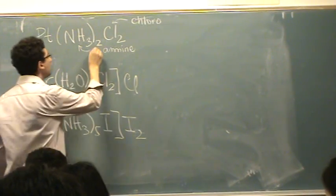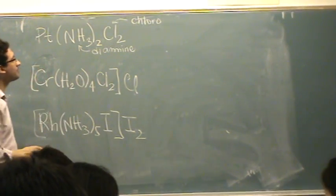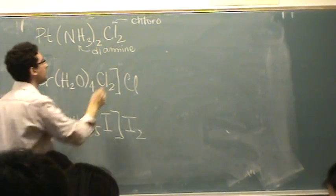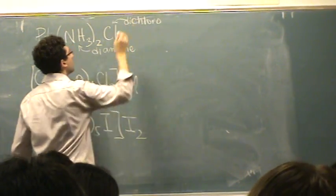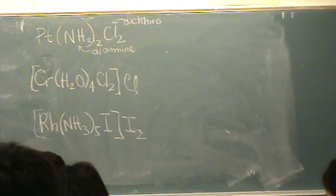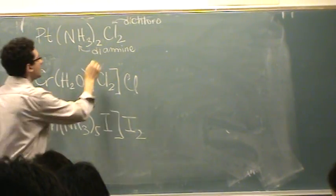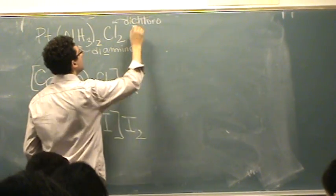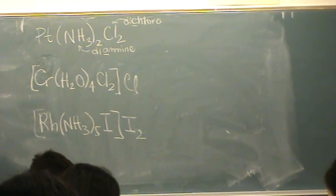So there's two amines, so we say diamine. And there's two chlorines, so dichloro. So there's prefixes that you need to put to indicate the number of things you have. And because A comes before C, it would be diamine dichloro.